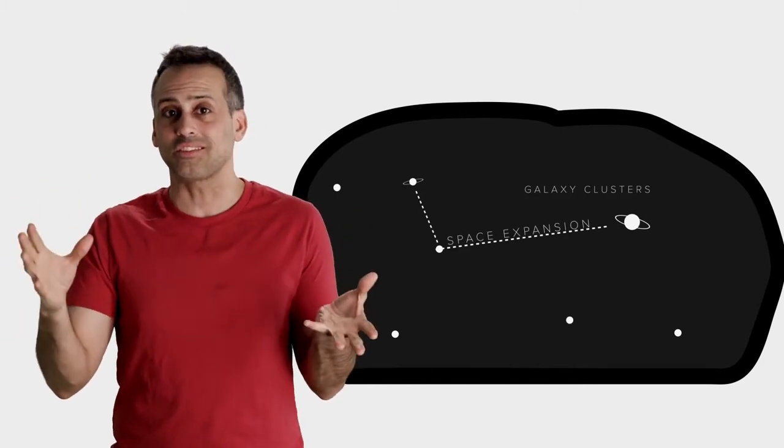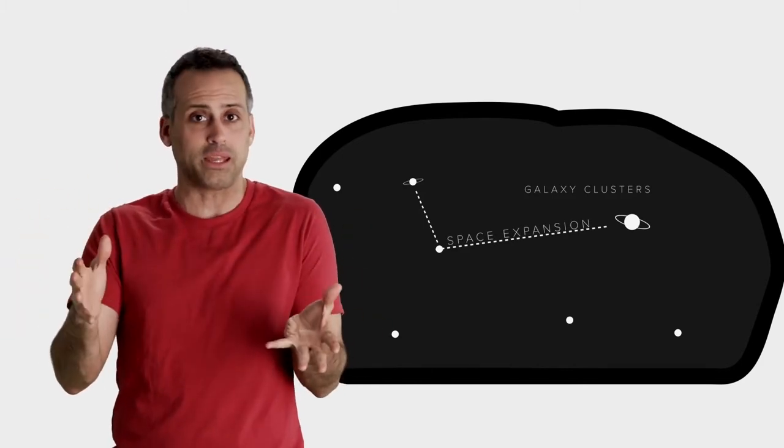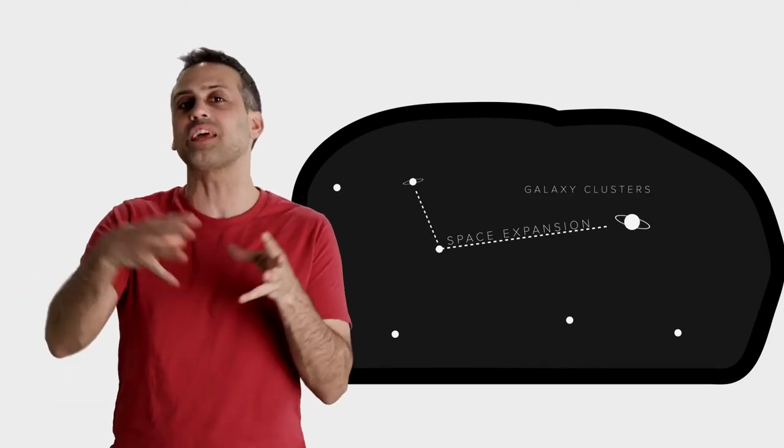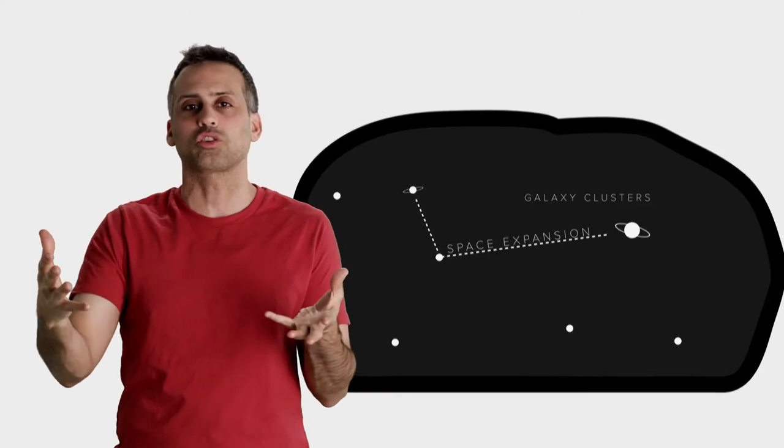Now, each raisin stays the same size. Galaxy clusters aren't expanding. And neither are individual galaxies or the earth or people or trees. It's just the relatively empty space between those large clusters of galaxies.